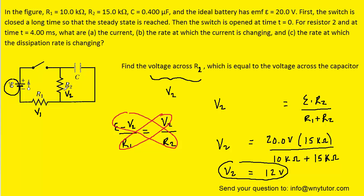Remember, the voltage across V2 will be the same as the voltage across the capacitor because they are in parallel with one another. So we can now say that Vc, the voltage across the capacitor, is also going to be 12 volts after the switch has been closed for a long time. Knowing the voltage across the capacitor will help us calculate the current flowing through resistor 2.